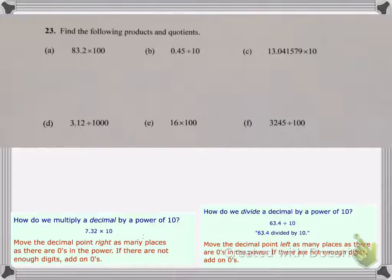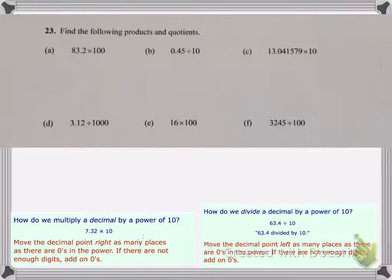Find the following products and quotients. If you look at all of these problems you will notice that we are either dividing or multiplying by a power of 10. When we say power of 10 we mean numbers like 10, 100, 1000.